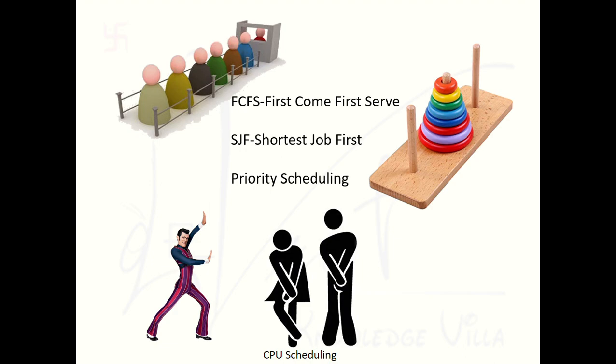In non-preemptive scheduling, we have to wait for the completion of a process before scheduling another. A physical analogy: like needing to use the washroom — you can't hold it indefinitely, but you also can't preempt certain natural processes. This is the concept of non-preemptive scheduling.